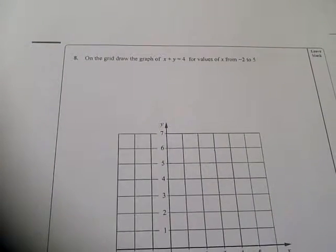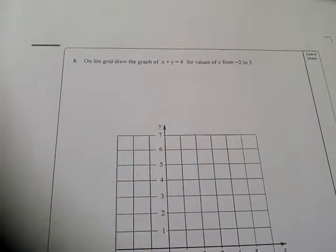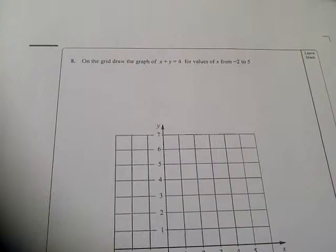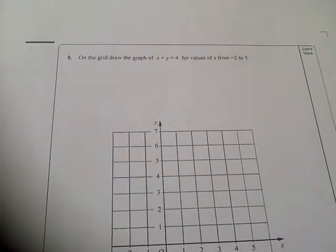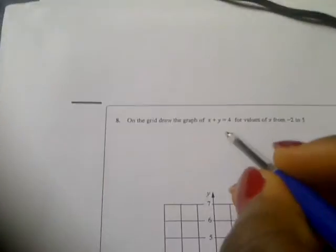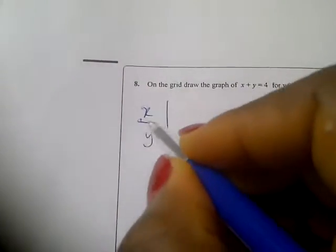Question number 8. On the grid, draw the graph of x plus y equal to 4 for values of x from minus 2 to 5. So we'll have a table of values of x and y.